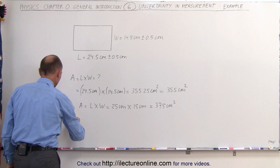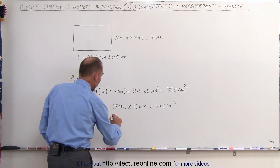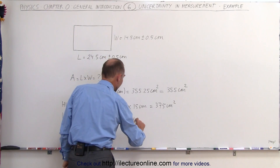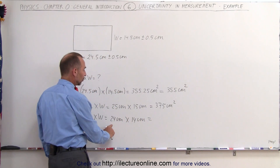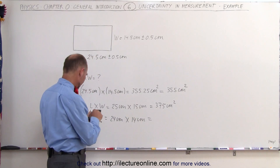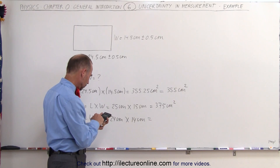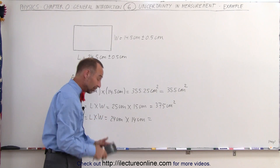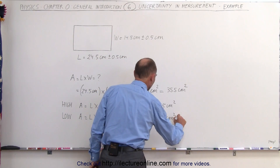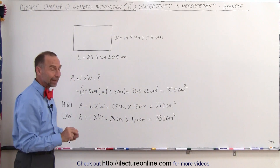On the low side, the area is equal to the length times the width — the length could be as low as 24 centimeters and the width as low as 14 centimeters. Multiplying those out: 24 times 14 gives 336 square centimeters. That would be 19 less than the value we'd get if the numbers were absolutely correct with no uncertainty at all.